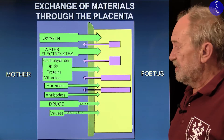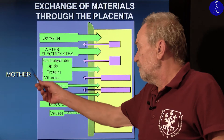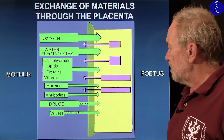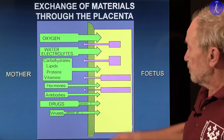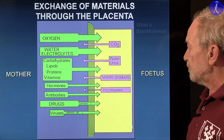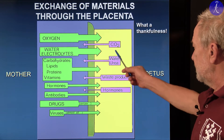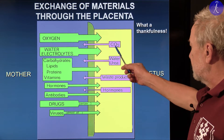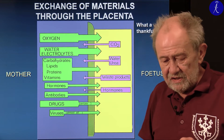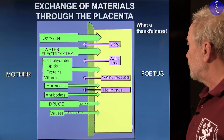What types of materials come from the maternal blood going to the fetal blood? You can see the list of them. And look at what the fetus gives back to the mother — beautiful materials. That is the thankfulness of the fetus, and I think this lasts even after birth, even more pronounced.